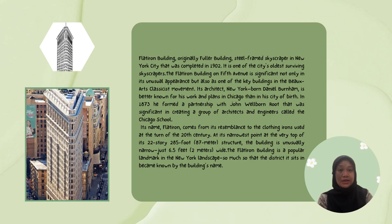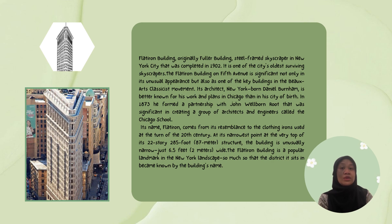The Flatiron Building, originally the Fuller Building, is a steel frame skyscraper in New York City that was completed in 1902. It is one of the city's oldest surviving skyscrapers. The Flatiron Building on Fifth Avenue is significant not only for its unusual appearance, but also as one of the key buildings in the Beaux-Arts movement. Its architect, New York-born Daniel Burnham, is better known for his work and plans in Chicago. In 1873, he formed a partnership with John Welborn Root, which was significant in creating a group of architects and engineers called the Chicago School.